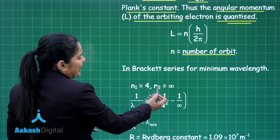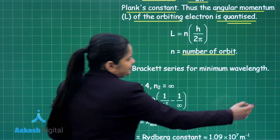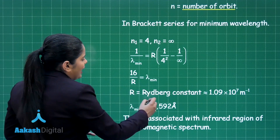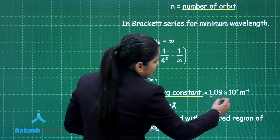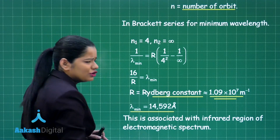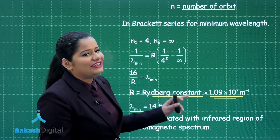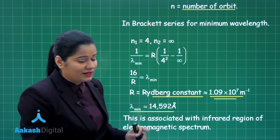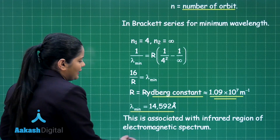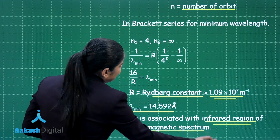When you put n2 as infinity and n1 as 4, you will calculate lambda minimum as 16 by R, where R is the Rydberg constant. When you substitute the value of R, you will get the minimum wavelength or the shortest wavelength to be 14,592 angstrom. By looking at this wavelength, you can see it is associated with the infrared region of the electromagnetic spectrum.